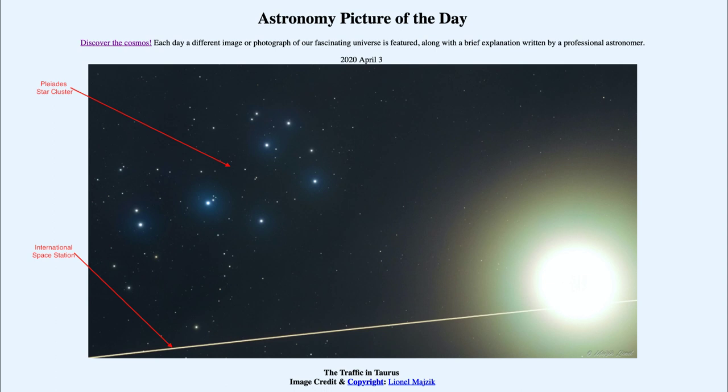The very bright object off to the right-hand side is the planet Venus. In order to see the Pleiades, Venus has to be vastly overexposed because it is much brighter than the stars of the Pleiades.